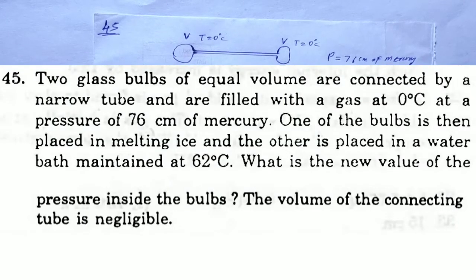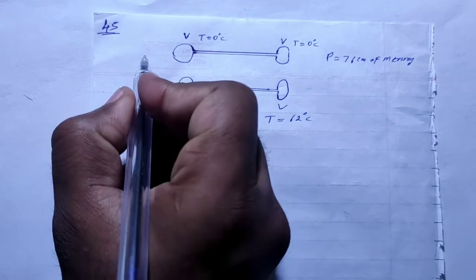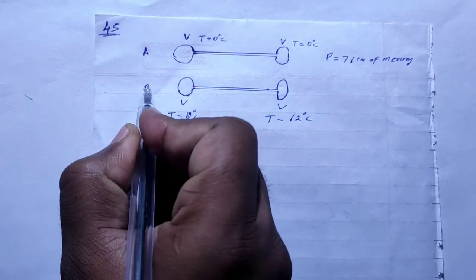SC Bama solution, Chapter 24, Kinetic Theory of Gas, question number 45. Two glass bulbs of equal volume are connected by a narrow tube and are filled with a gas at 0 degrees Celsius at a pressure of 76 cm of mercury. One of the bulbs is then placed in melting ice and the other is placed in water maintained at 62 degrees Celsius. What is the new value of the pressure inside the bulb? The volume of the connecting tube is negligible.